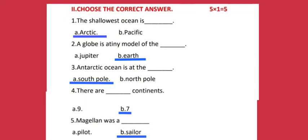The correct answer is Earth. Number three: Antarctic Ocean is at the — Option A: South Pole, Option B: North Pole. The correct answer is South Pole. Number four: There are — continents. Option A: 9, Option B: 7. The correct answer is 7.